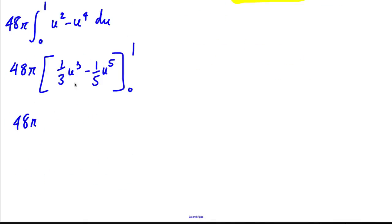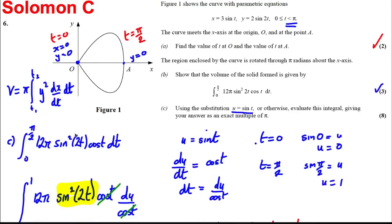Keep the 48π there, substitute in 1 and you get 1/3 - 1/5. One third take away one fifth is 2/15. You put 0 in and you get nothing, so it's 2/15. Then multiply that by the 48π, you get 32π/5 units cubed, and we're done. That's the volume. Quite a tricky question there, but if you kept your wits about you, you should be fine.